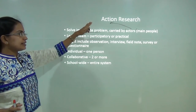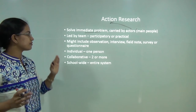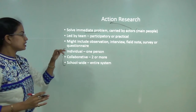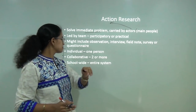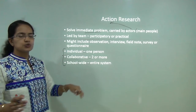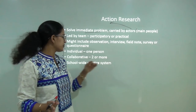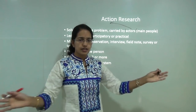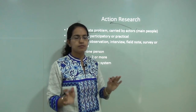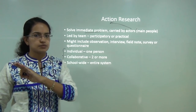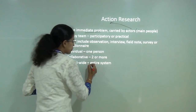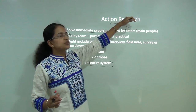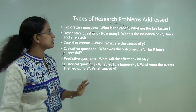Action research may include observation, interviews, field notes, surveys, or questionnaires. It can be further classified into three heads: individual research; collaborative research, involving two or more persons or a group; and school-wide or region-wide action research, where the entire group in a region — school, college, or region-specific — works together to address a problem. These are the three basic ways under which we understand action research.